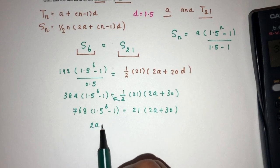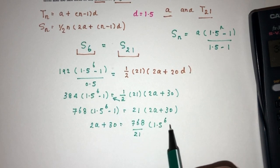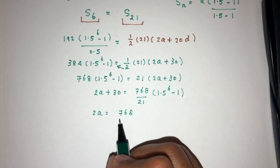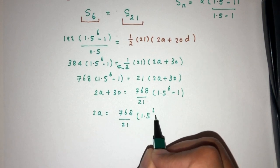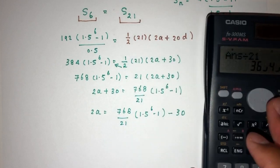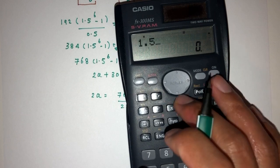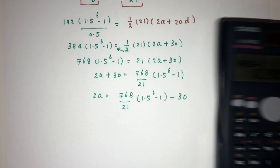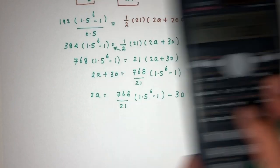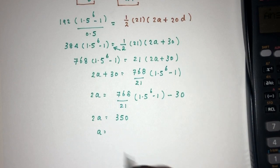2a plus 30 will be 768 divided by 21 times 1.5 to the power 6 minus 1. Then 2a will be all this 768 divided by 21, 1.5 to the power 6 minus 1, minus 30. So 1.5 power 6 minus 1, multiply by 768 divided by 21 minus 30, that will be 350. So 2a will be 350. So a will be divided by 2, that should be 175.